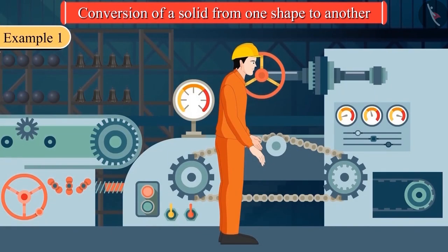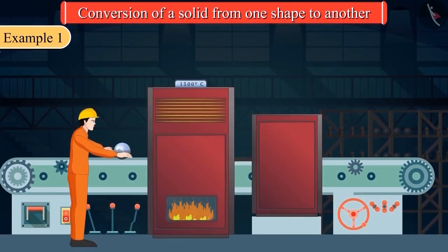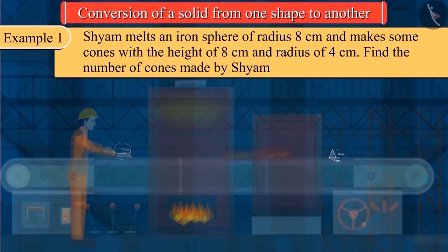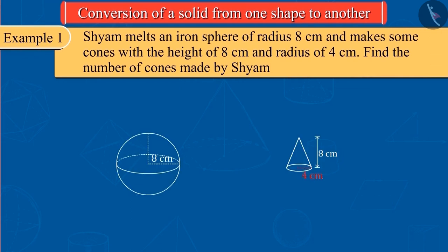Shyam works in an iron factory where iron objects of different shapes are made. One day Shyam tries to melt an iron sphere of radius 8 cm and makes some cones with a height of 8 cm and radius of 4 cm.